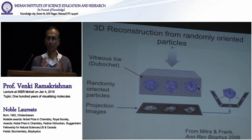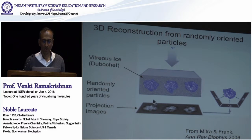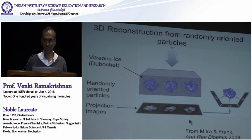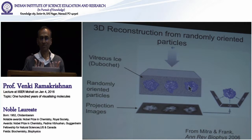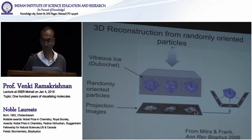People have worked out mathematical methods so that, as long as you know it's the same molecule, you can figure out from the data which orientation each of these projections corresponds to. That means you can figure out that this image corresponds to looking at the molecule from this direction, and this projection from this direction. This approach of figuring out orientations from two-dimensional projections was developed starting in the mid-70s through the 80s and 90s.